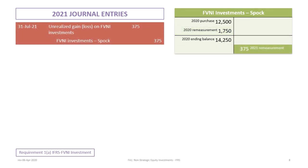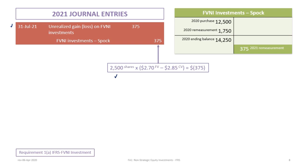Chronologically, the next event happens on July 31st, 2021, where McCoy sells 2,500 Spock shares. But prior to recording the sale, we have to adjust to fair value the portion of the shares being disposed of. The current fair value is $2.70 versus the carrying value of $2.85 at December 31, 2020. The shares being sold have dropped by $0.15 times 2,500 shares, which is $375. We debit the unrealized gain or loss account on FVNI investments and credit the FVNI investment Spock account for $375 — recorded as a credit remeasurement in the T account prior to the sale.